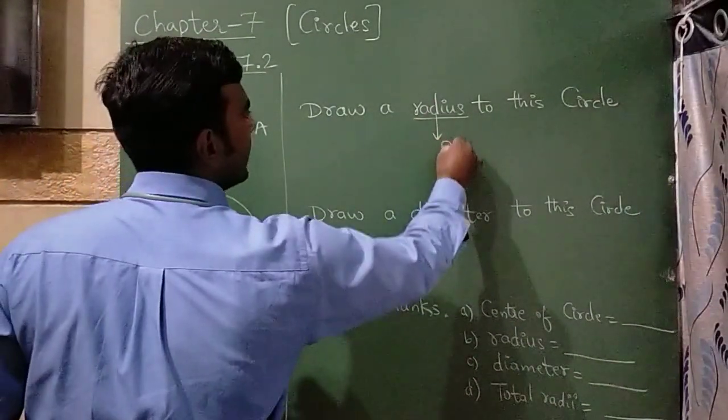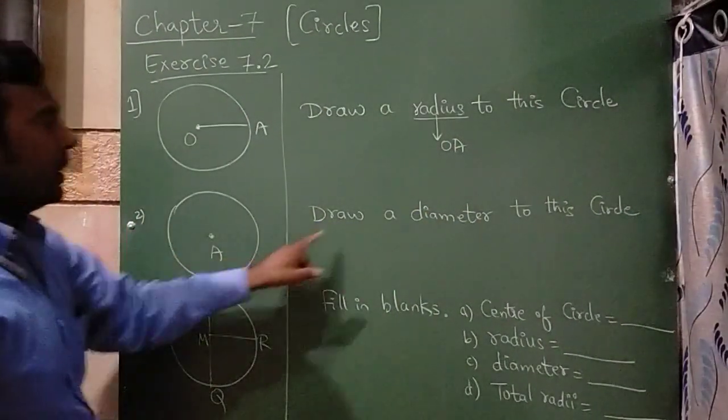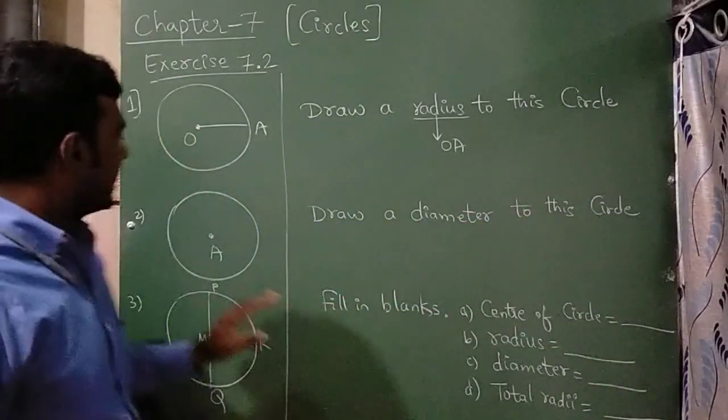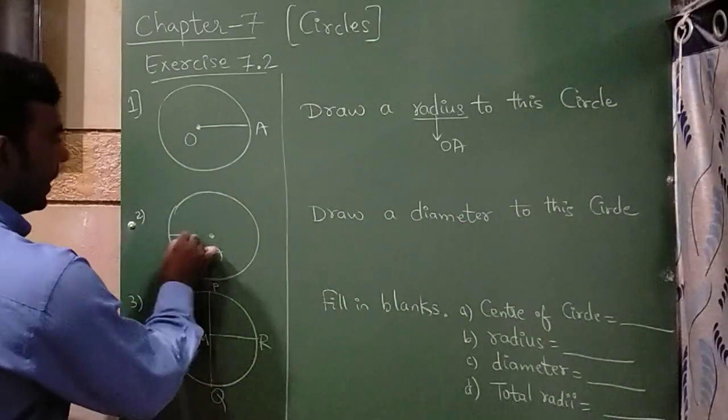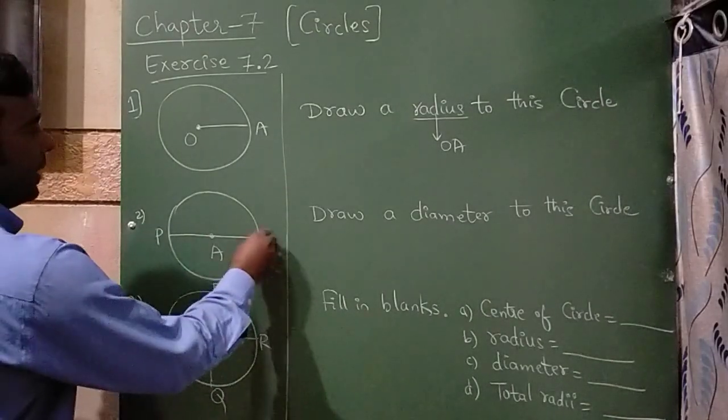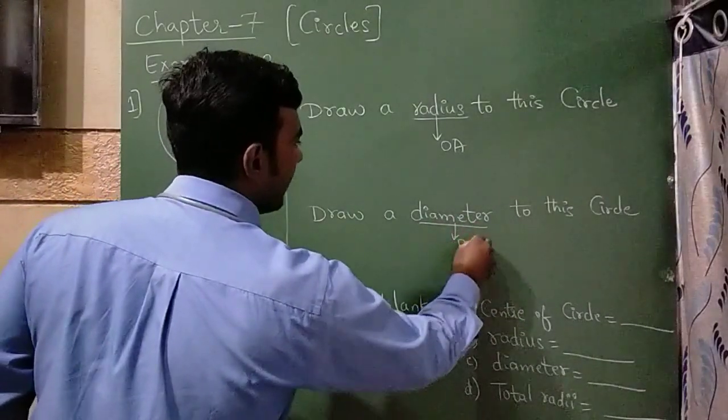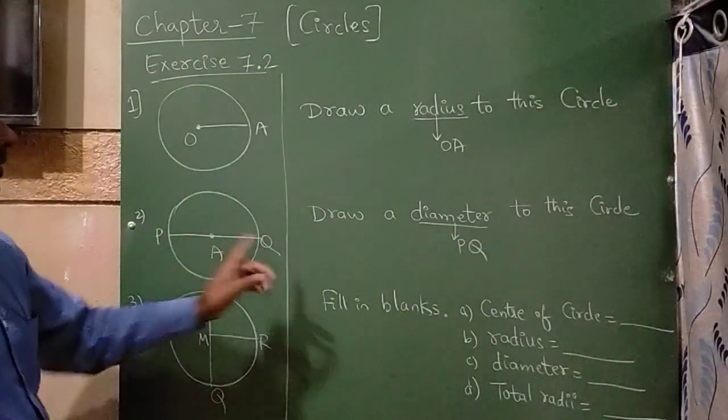So OA is a radius. Now in the second question, draw a diameter to this circle. So from here I am going to draw. I will name it as P and Q. So diameter means it is from P to Q.